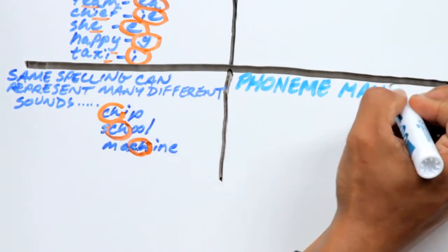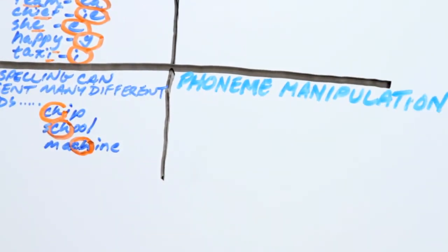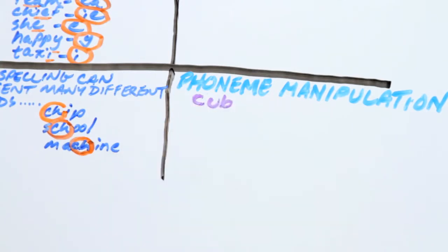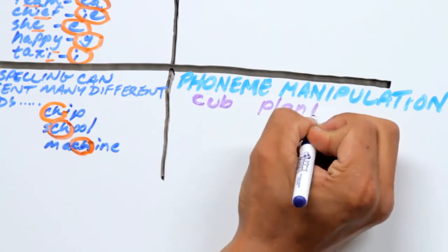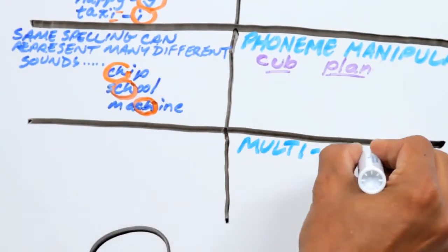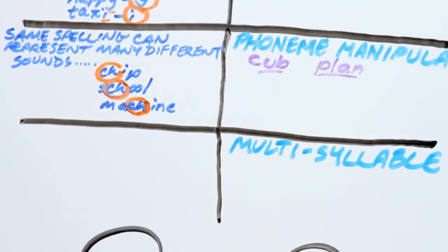The third skill is phoneme manipulation, which is the skill of moving sounds around in words. For example, the word club without the l is cup. The word plant without the t is plan.